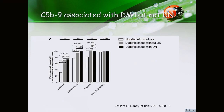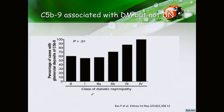They also looked at C5b-9 — the membrane attack complex, the last portion of the complement cascade. They found that C5b-9 levels were almost equal in diabetic cases with and without diabetic nephropathy, but the percentage was associated with the severity of diabetic nephropathy.